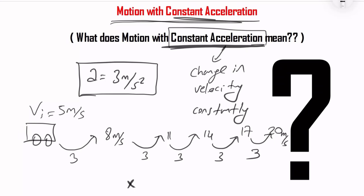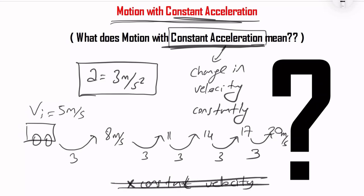This is important: constant acceleration means there is a change in velocity, but that change happens constantly — at a fixed rate. I am going to explain this with a simulation. I hope you will enjoy it.